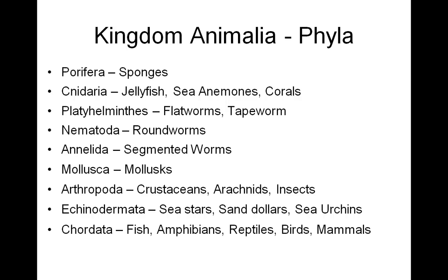Platyhelminthes — these are our flatworms, and an example would be a tapeworm. Next, Nematoda, our roundworms. Annelida, segmented worms. Phylum Mollusca — here we find our shelled animals, our mollusks. Arthropoda — crustaceans, arachnids, and insects.